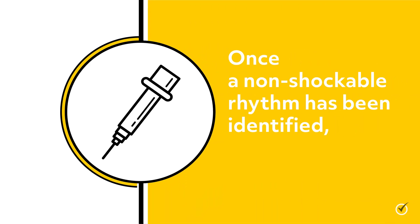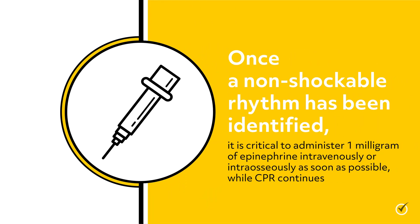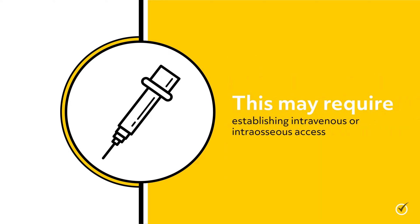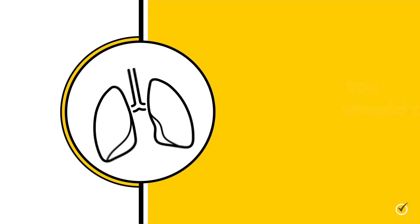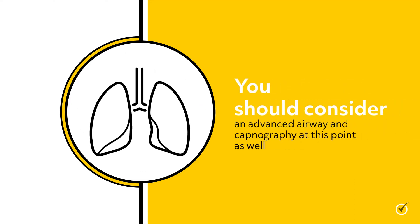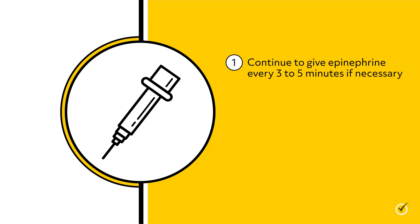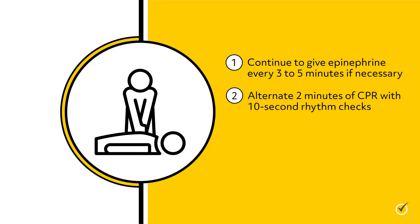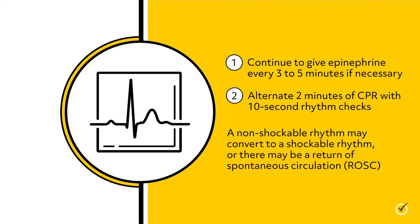Once a non-shockable rhythm has been identified, it is critical to administer 1 mg of epinephrine intravenously or intraosseously as soon as possible while CPR continues. This may require establishing intravenous or intraosseous access. Consider an advanced airway and capnography at this point as well. Continue to give epinephrine every 3-5 minutes if necessary, and alternate 2 minutes of CPR with 10-second rhythm checks, because a non-shockable rhythm may convert to a shockable rhythm, or there may be a return of spontaneous circulation, or ROSC.